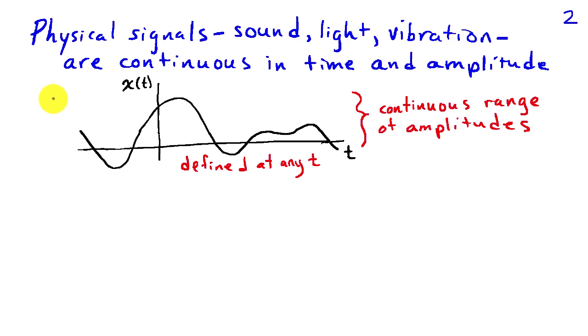So the kinds of signals that we encounter in the physical world—sound, light, vibration—well, they are continuous in both time or the independent variable, if we're talking about a spatial signal like an image, and they are continuous in amplitude. That means that at any point in time, they are defined, and the amplitudes can take a continuous range of values.